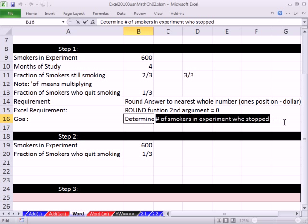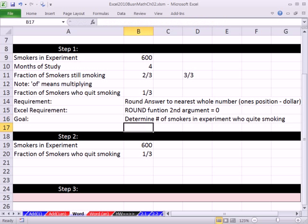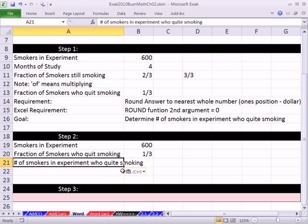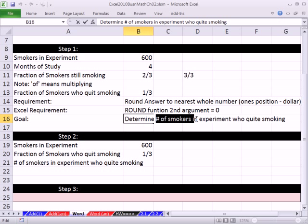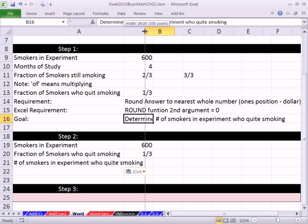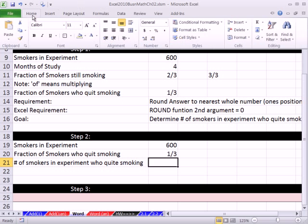I'm going to just change that stop to quit smoking. Number of smokers in experiment who quit smoking. Copy, change that, I'm going to put that right here. In this cell, I'm going to Ctrl V, that's paste. Actually up here I just copied - you could right-click or Ctrl C and then paste it there. This column is not wide enough, so I'm going to point between A and B and click and drag. Now here I'm going to do some formula.